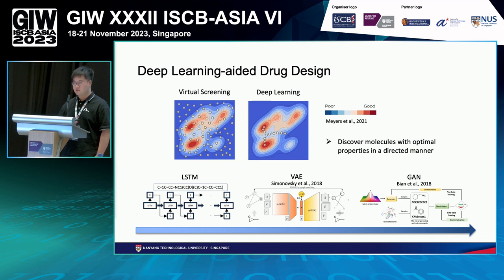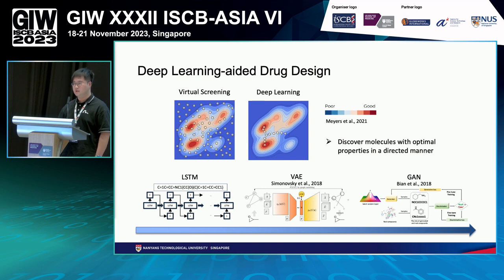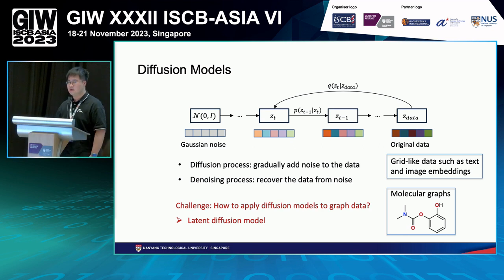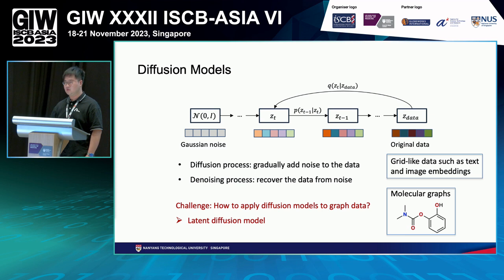To address this problem, researchers started investigating graph-based neural networks such as graph variational autoencoders and generative adversarial networks. Besides all those generative models, there is another method called diffusion models, which has recently been demonstrated to outperform the other generative models in many tasks such as image and text generation.